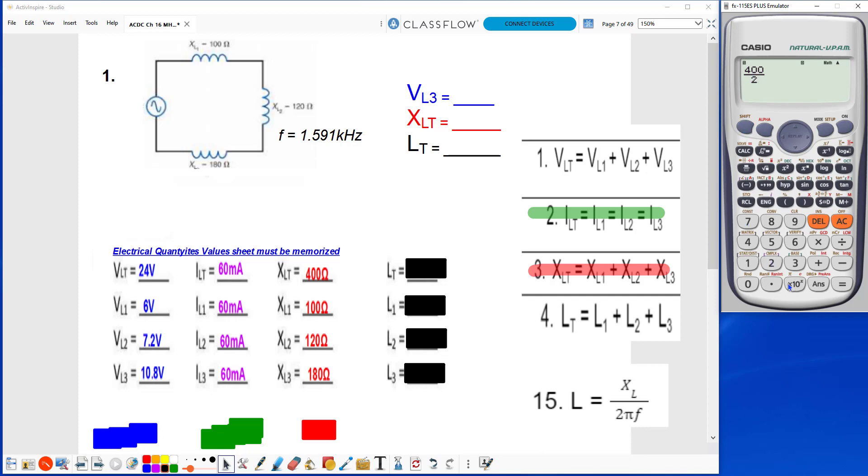To find pi, you hit shift, exponent button, and it puts pi for you, times my frequency. What is my frequency? 1.591 kilohertz. 1.591 times 10 to the third,